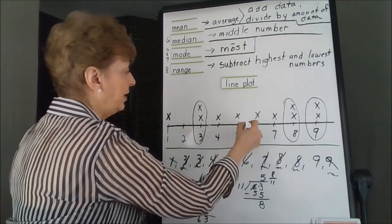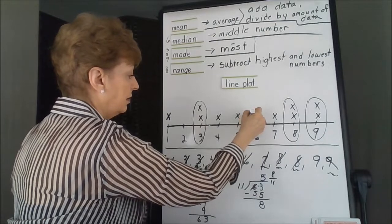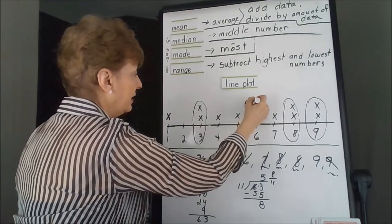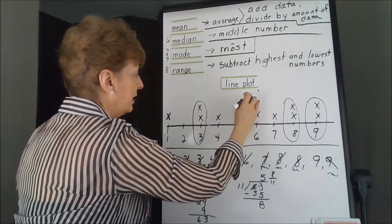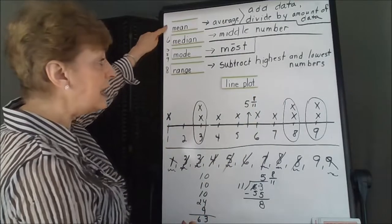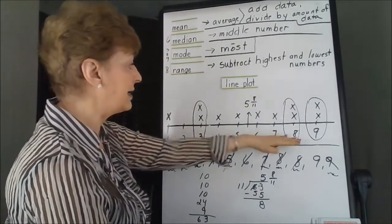So on our number line, it would fit right in here. 5 and 8 elevenths is the mean of this data set.